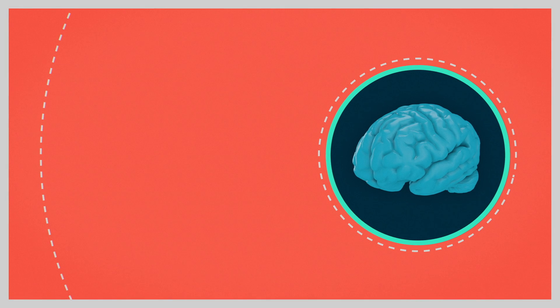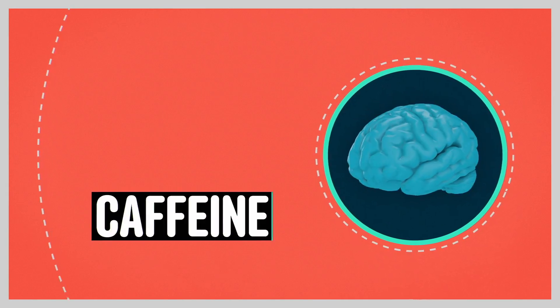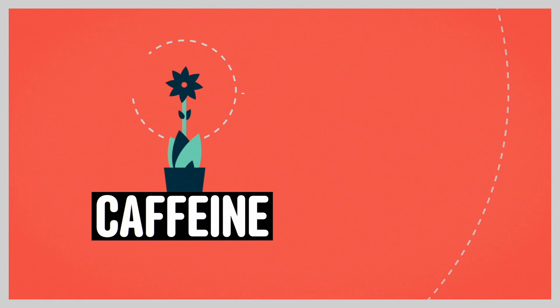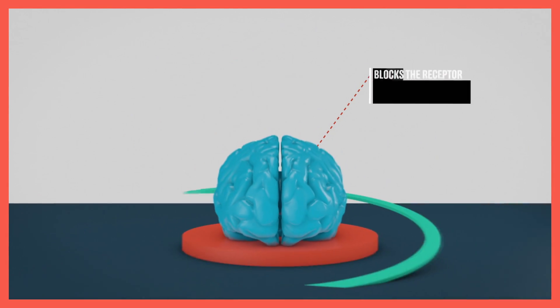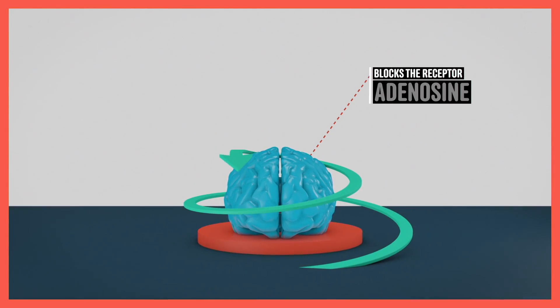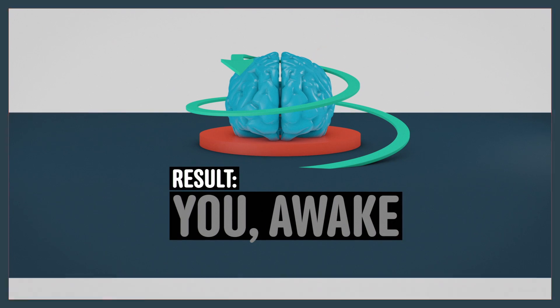Once you've had a few sips, your favorite ingredient kicks in. Caffeine. It's actually an alkaloid plant toxin like nicotine and cocaine. But don't let that scare you. In your brain, it blocks receptors for the neurotransmitter adenosine. Result? You're awake.